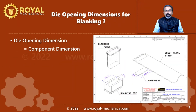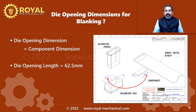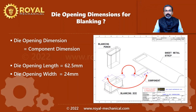Now let's calculate the die opening dimension. We use a simple formula, applicable only for the blanking operation: the die opening dimension is equal to the component dimension. The length of the die opening equals the length of the component — 62.5 mm — and the width of the die opening equals the width of the component — 24 mm.